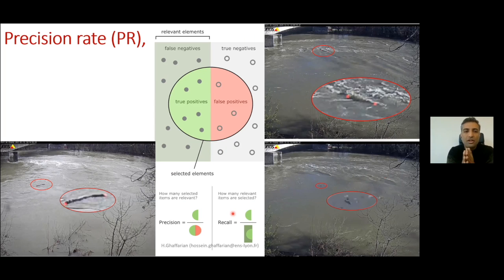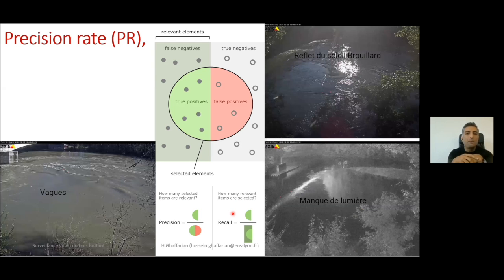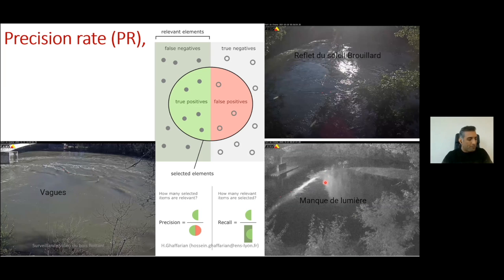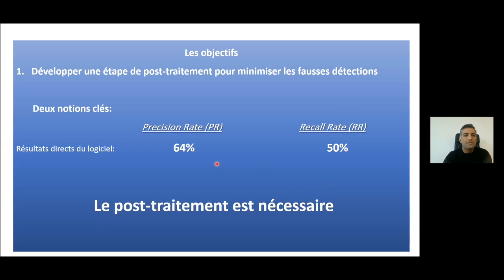In a river, there are many parameters that reduce these two metrics — for example, waves inside the river, low visibility due to light reflection from the sun or fog, and lack of luminosity. When we ran the software for the first time, the raw results gave us 64% precision and 50% recall rate, which showed that post-treatment is necessary.